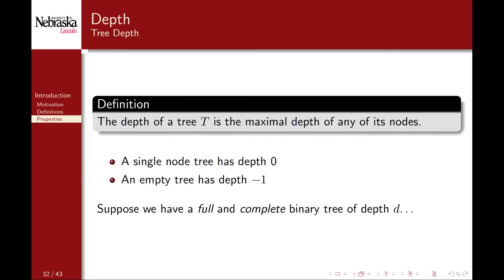The depth of the tree itself is defined to be the maximal depth of any node, so the depth of this tree is 5. By convention, if we have a single node tree, its depth is 0. If we have an empty tree, its depth is defined by convention to be -1.